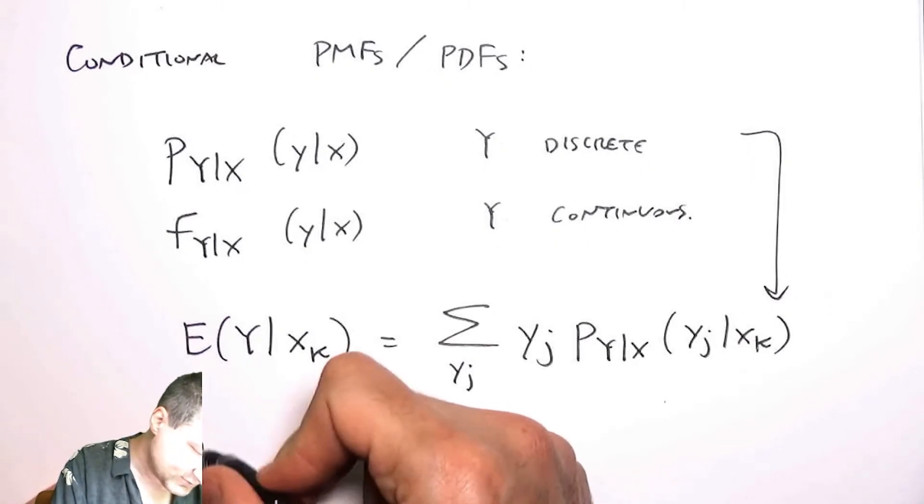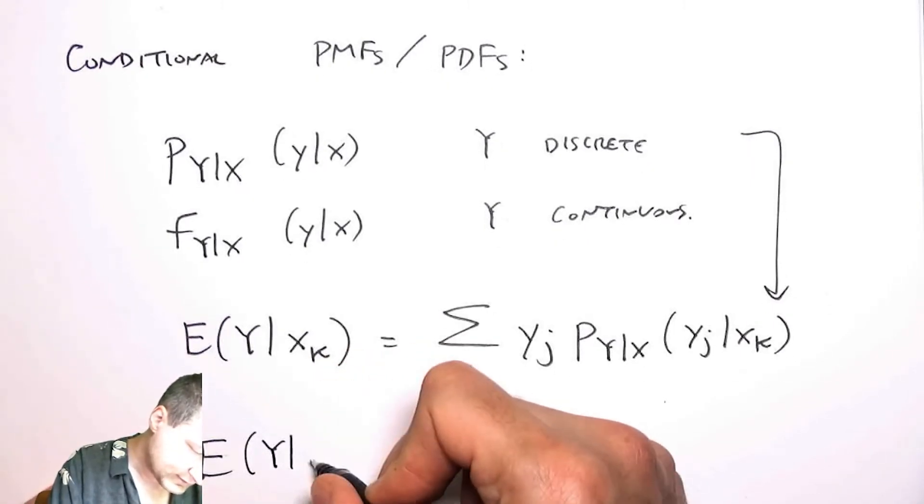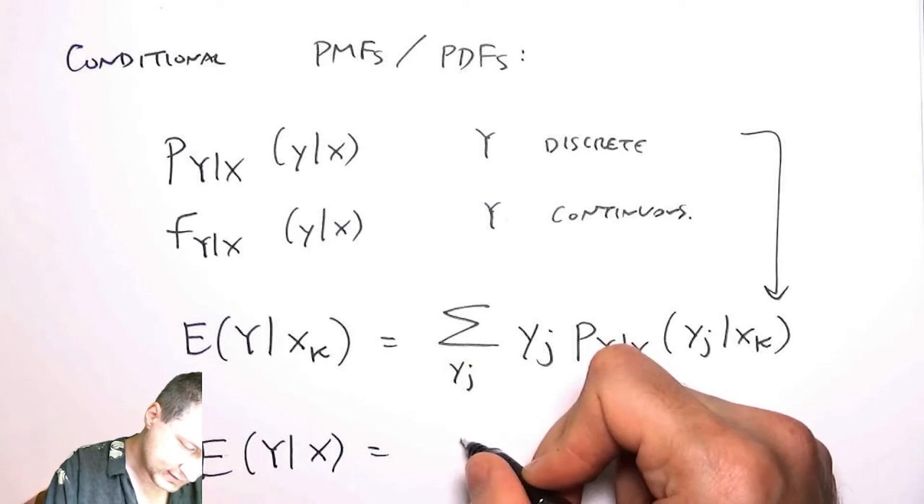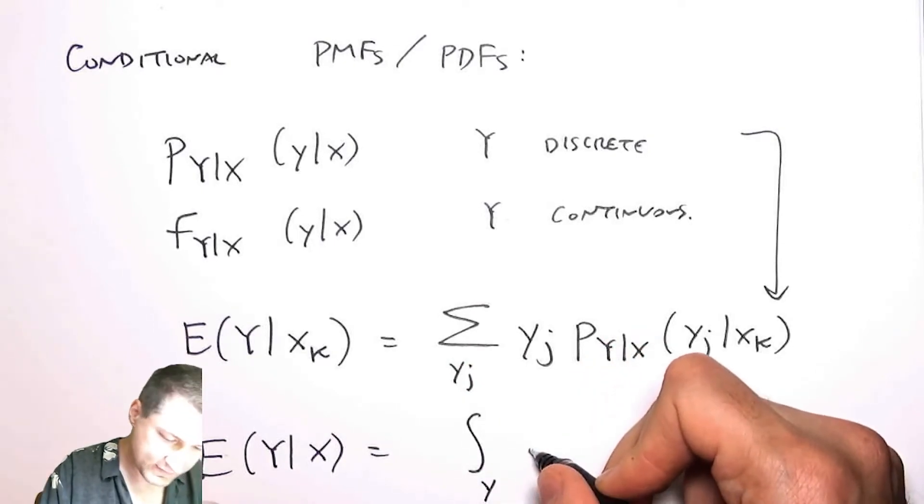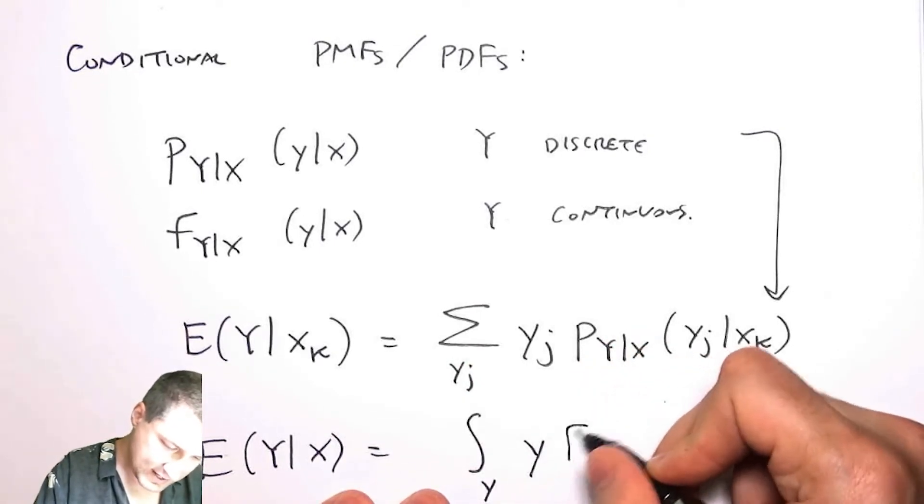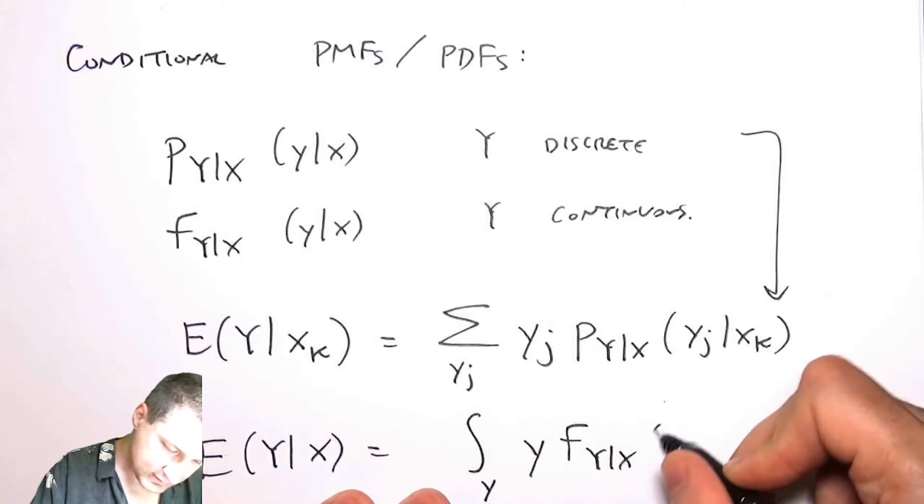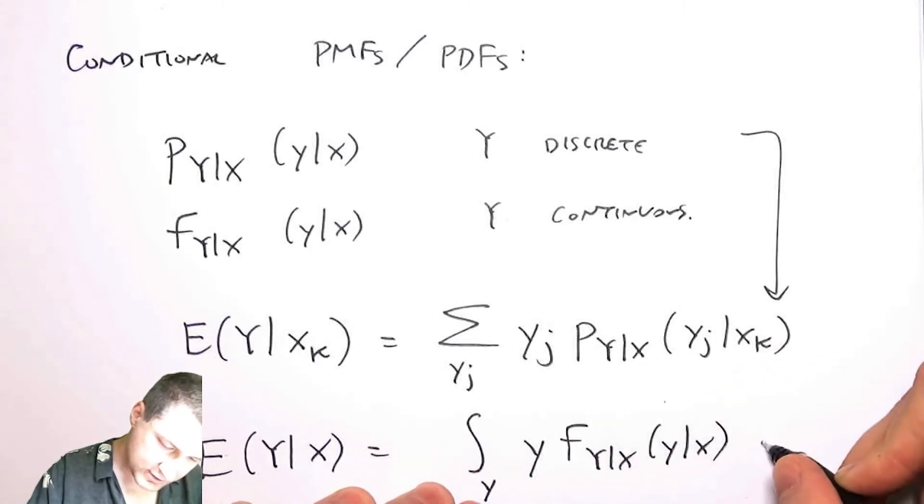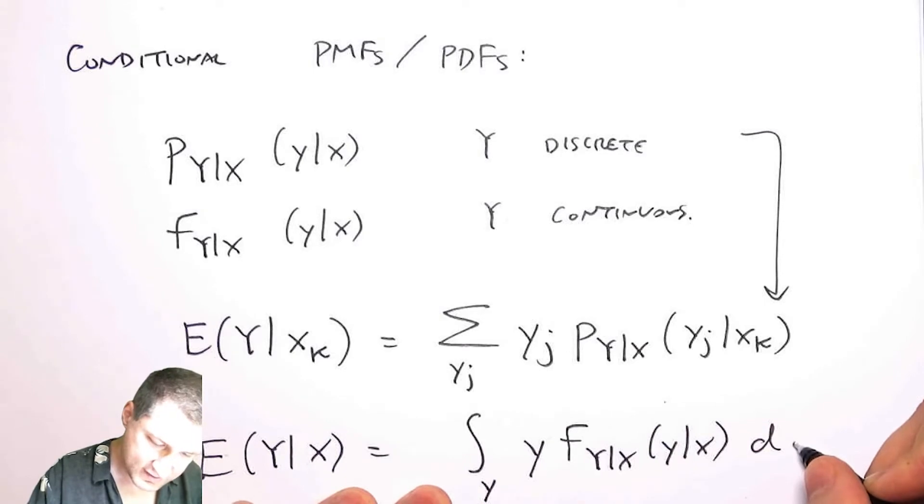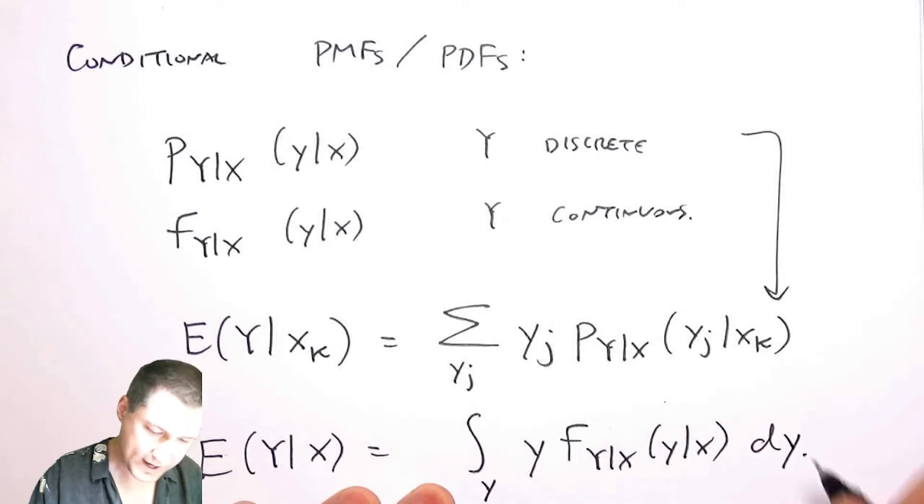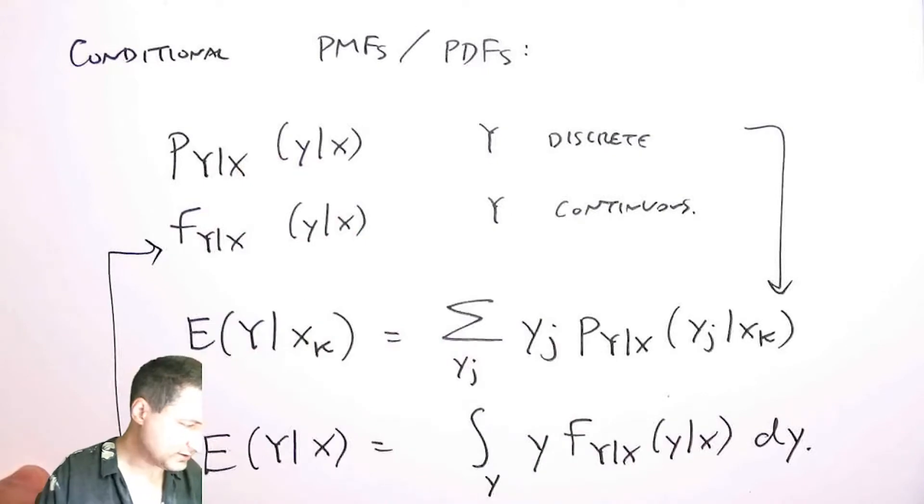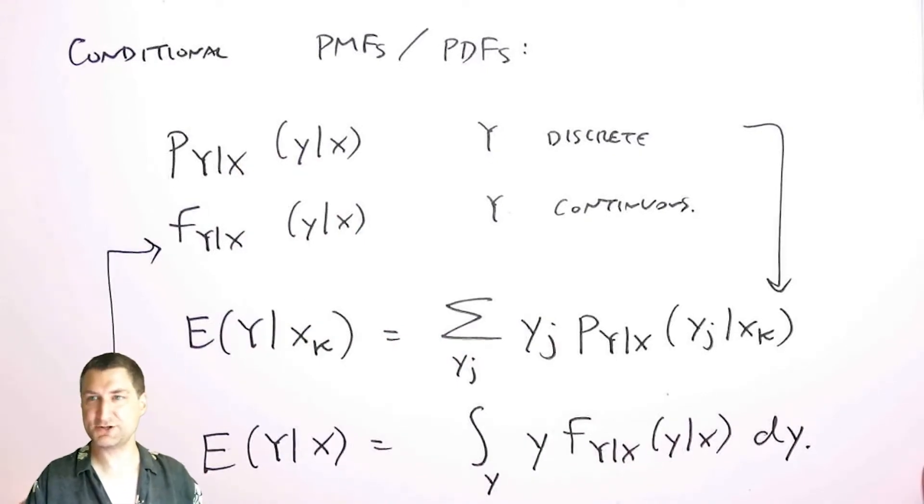And in the continuous world, this would be like saying I would integrate over the possible values of y times the conditional PDF dy. This would be the continuous version.